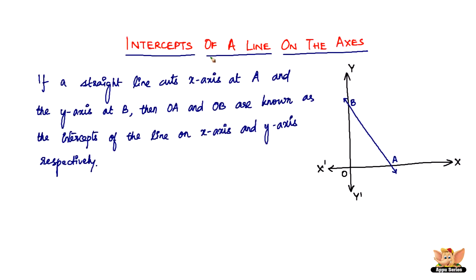Here we have the explanation for the intercepts of a line on the axes with the diagram. It says that if a straight line cuts the x-axis at A and the y-axis at B, this blue line cuts the axes at A and B.